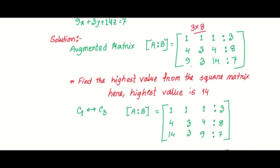In complete pivoting, we search for the highest value across the entire matrix. We select the element with the highest absolute value and bring it to the top-leftmost corner position. This may require both column swapping and row swapping, unlike partial pivoting which only does row swapping.